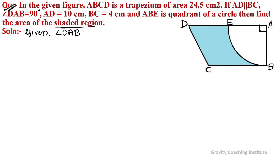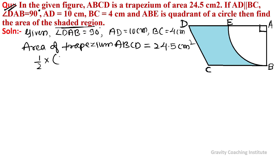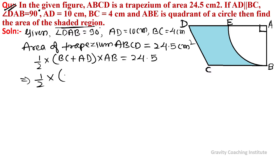Given: angle DAB equals 90 degrees, AD equals 10 cm, and BC equals 4 cm. Area of trapezium ABCD equals 24.5 cm². We know that area of trapezium equals half into sum of parallel sides, so BC plus AD into height AB equals 24.5. This gives us 1/2 into BC value 4 cm and AD value 10 cm.